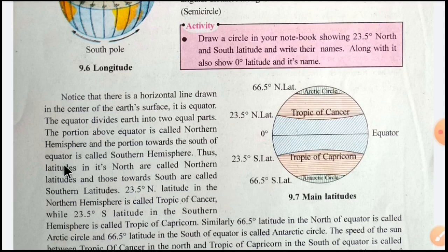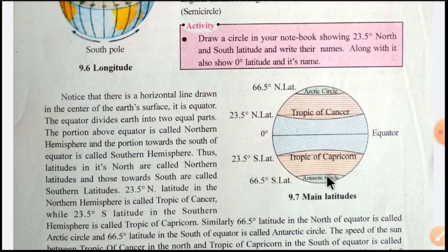Thus, latitudes in the North are called Northern Latitudes, and those towards the South are called Southern Latitudes. The equator's upper side — all those parts are called Northern Latitudes, and the south part, the equator's downside, are all called Southern Latitudes.